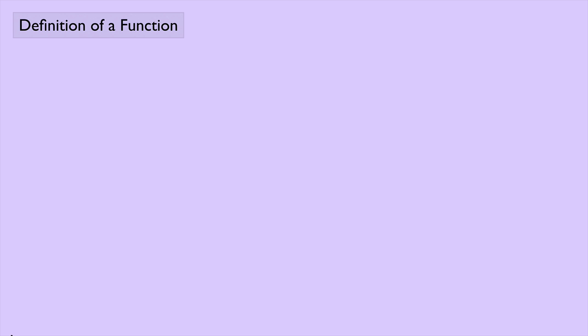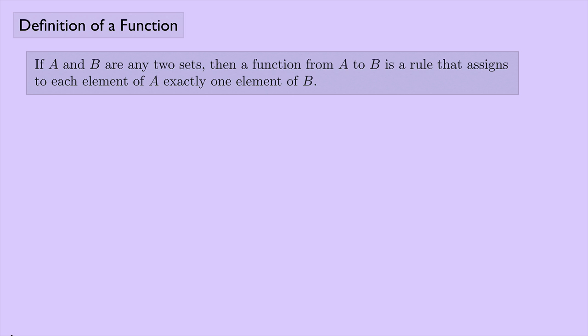You've probably seen functions before in your studies of mathematics, but defining a function is a surprisingly tricky business. Let's look at one possible definition of a function. If A and B are any two sets, then a function from A to B is a rule that assigns to each element of A exactly one element of B. So in this case, we are saying that a function is a rule.